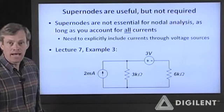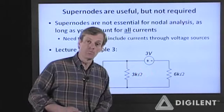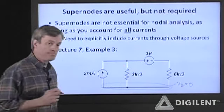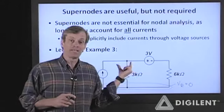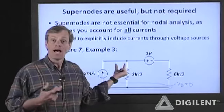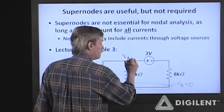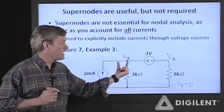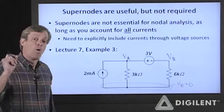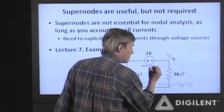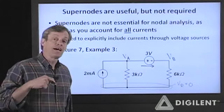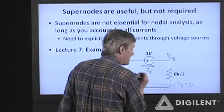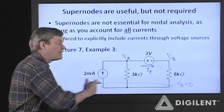Back to our example. Let's set this up again and ignore the fact that there is a potential supernode here. I'm still going to choose a reference node, V sub R equals zero. Let's say I don't even recognize the fact that these are dependent voltages — I can create these as two different voltages, V sub A and V sub B. I can apply KCL at each of these nodes, but I need to make sure I account for the current through this voltage source. I'll call this current I sub S for source current.